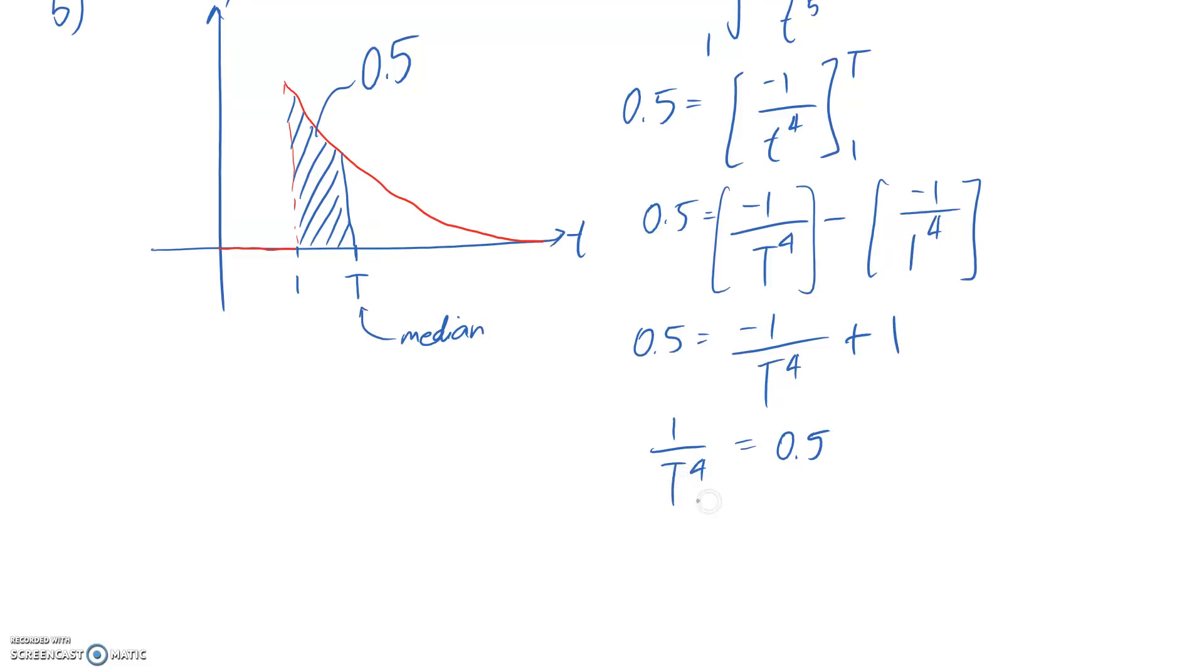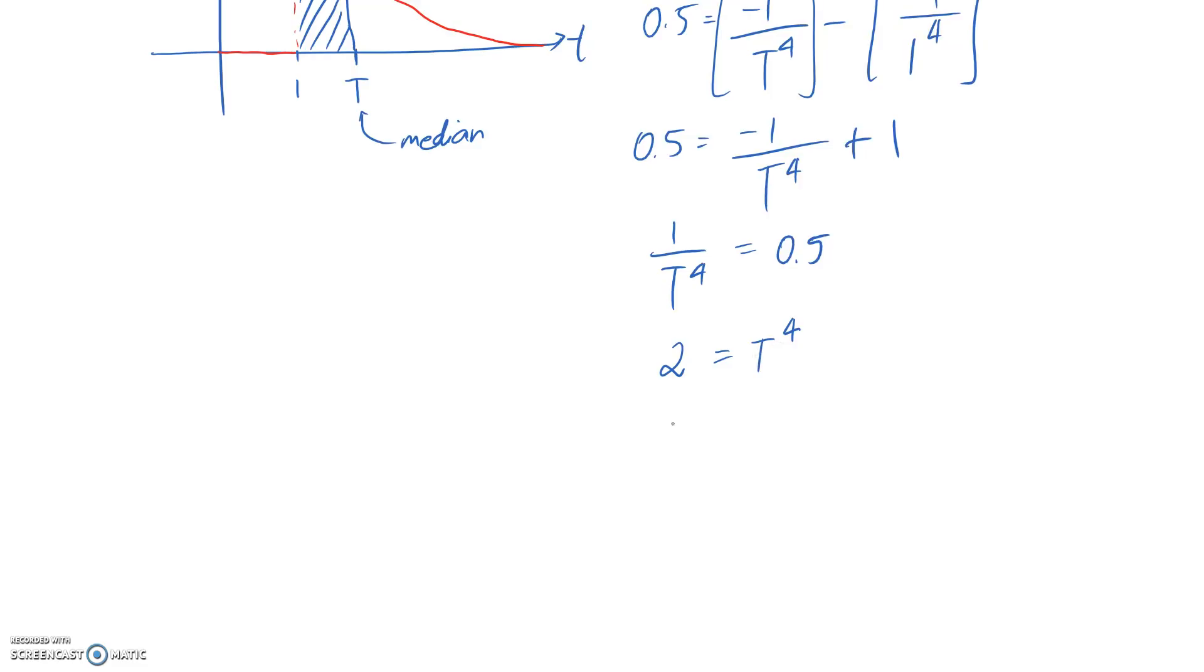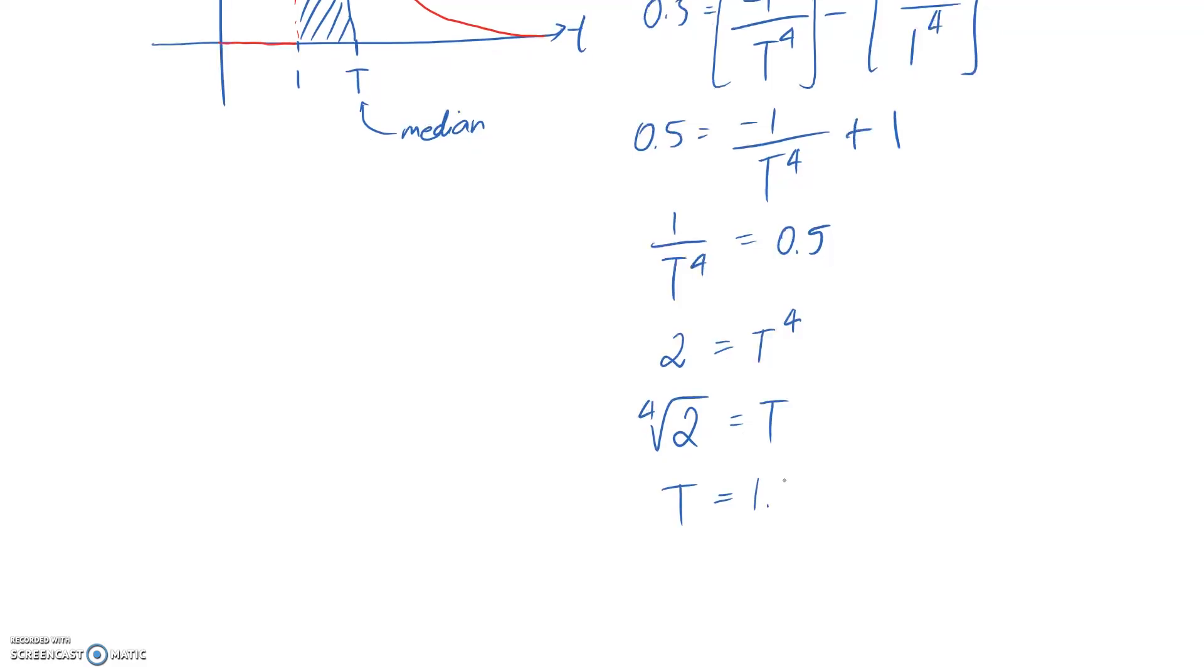I then want to get the T on the top line. So if I multiply it up, and at the same time, I'll divide by a half, which is the same as multiplying by 2, so I'm going to get 2 is equal to T to the 4. So T on its own, it's going to be like the fourth root of 2. And if you type that into a calculator, it's about 1.19, and the units are going to be years.